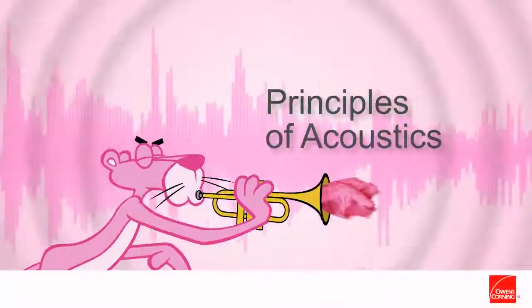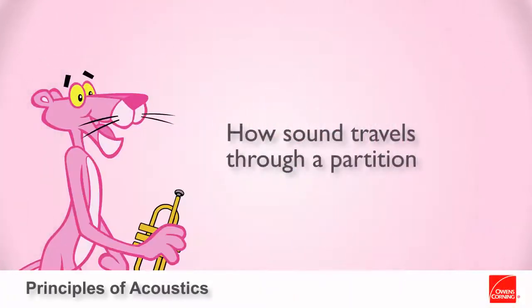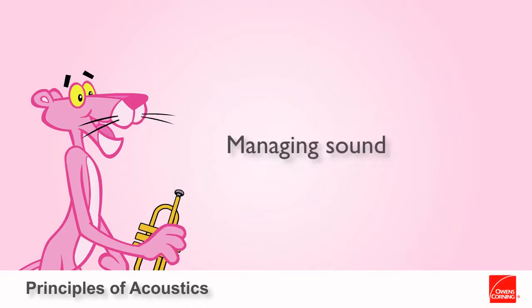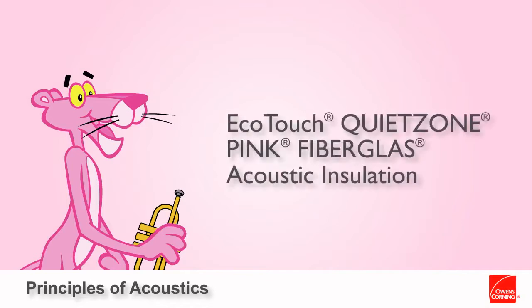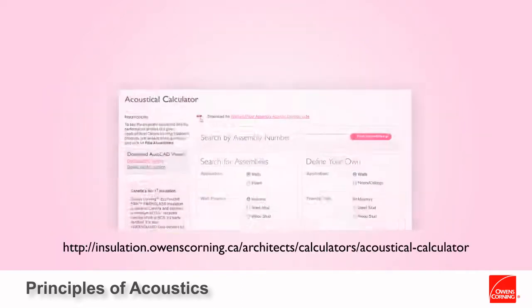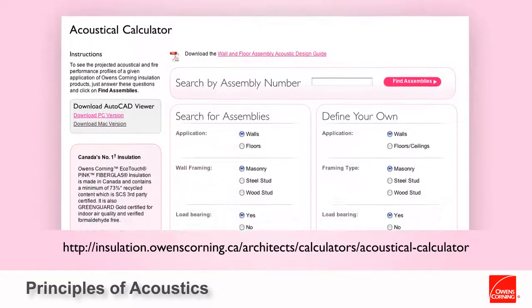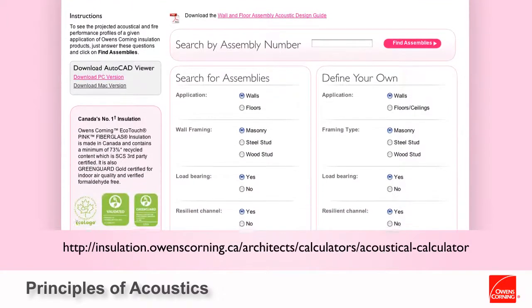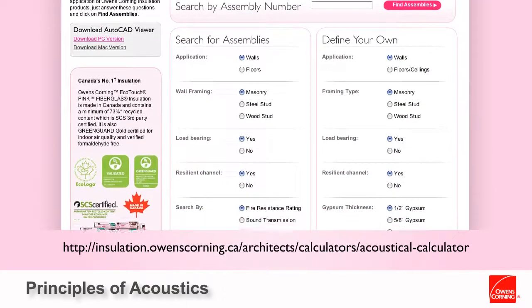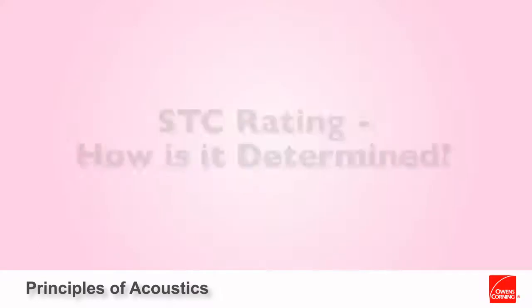Welcome to the Principles of Acoustics, an overview of how sound travels through a partition, how to manage it, and how EcoTouch QuietZone Pink Fiberglass Acoustic Insulation from Owens Corning can help achieve desired acoustic ratings. You may also visit the Owens Corning Online Acoustic Wall Design Calculator to find solutions for your partition assemblies.